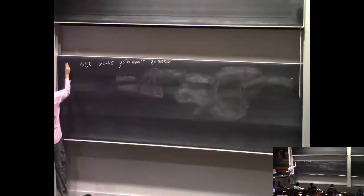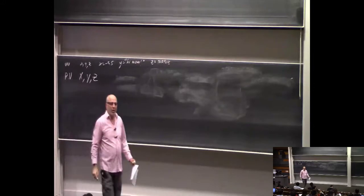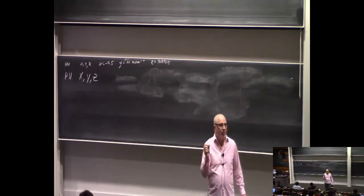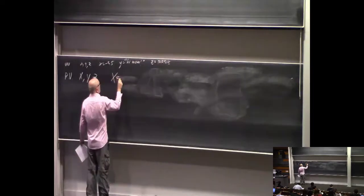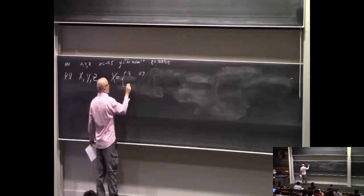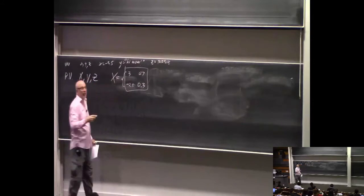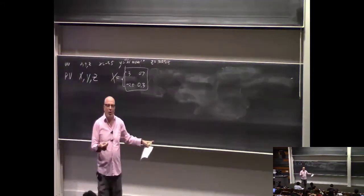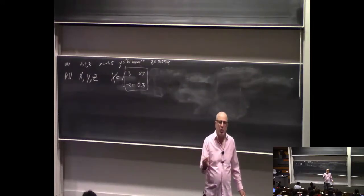A random variable, which we write with capital letters X, Y, Z, does not hold a single value — it holds a set of values with corresponding probabilities. A regular variable holds a single value; a random variable holds a set of values with probabilities attached to all of them. For example, random variable X can hold the value 3 with probability 0.7 and negative 2.5 with probability 0.3. Just like a regular variable can change value, you can assign different distributions to a random variable, but at any one time it holds a distribution.